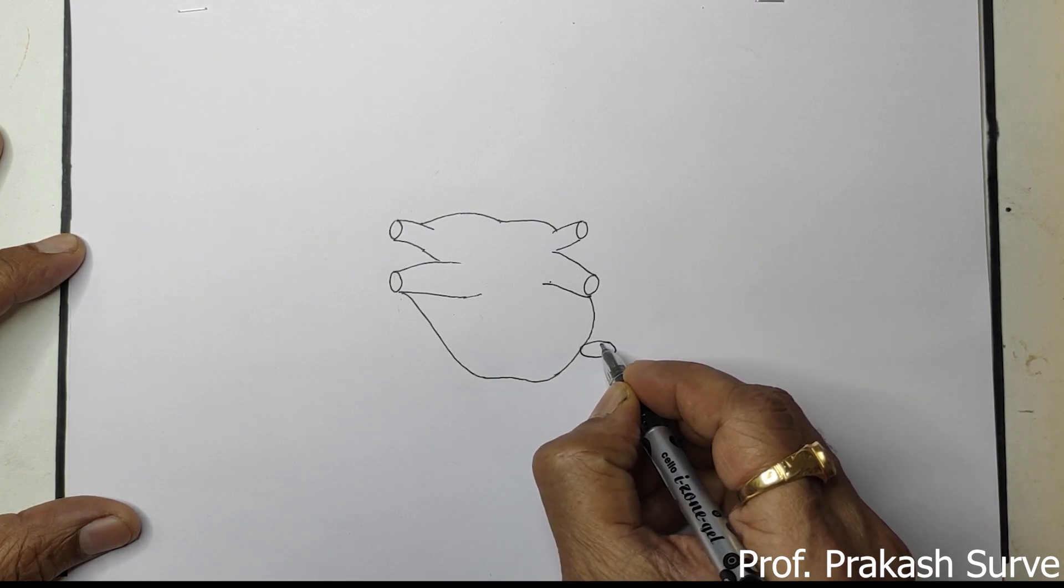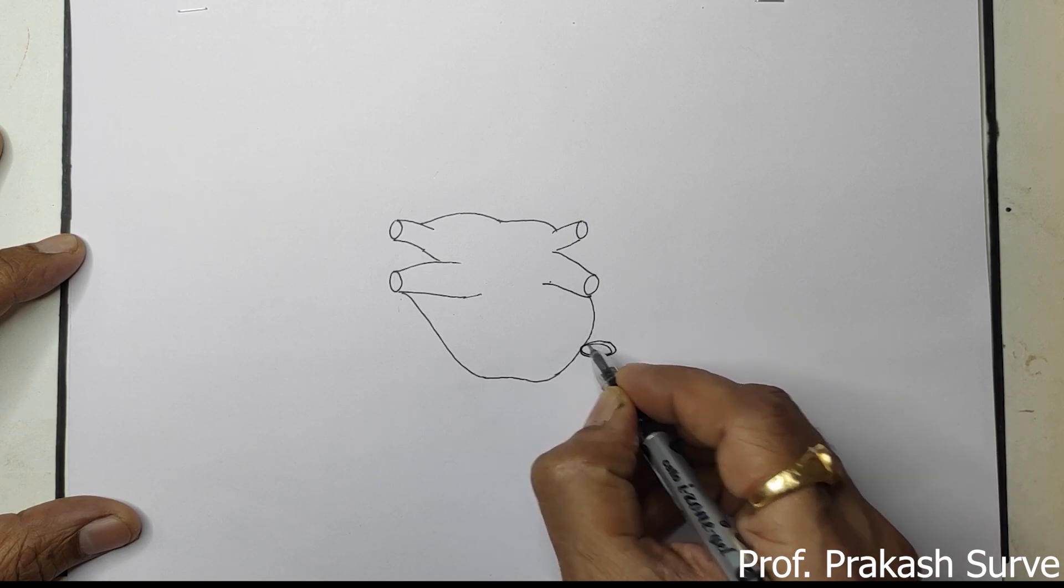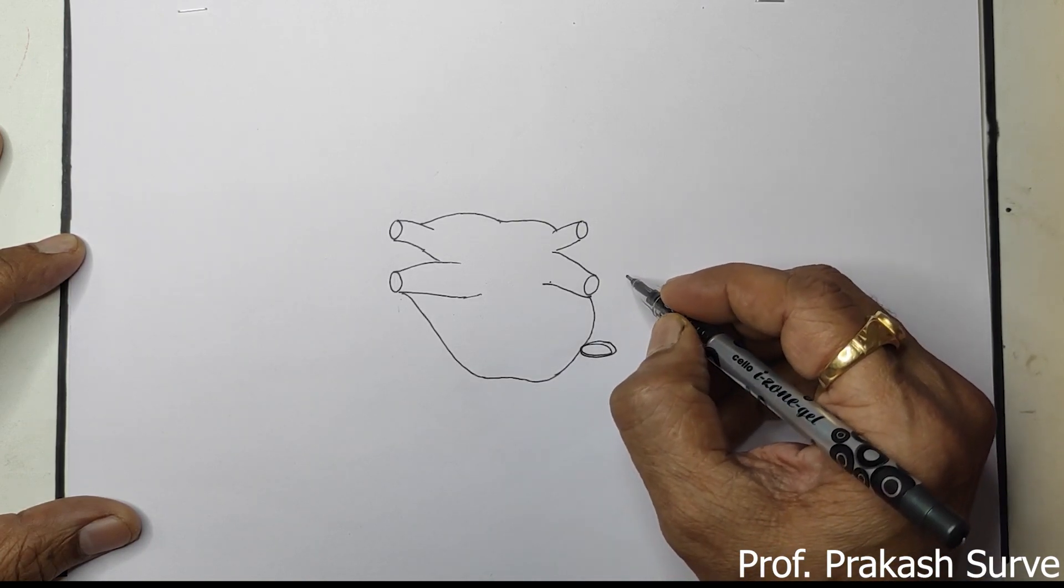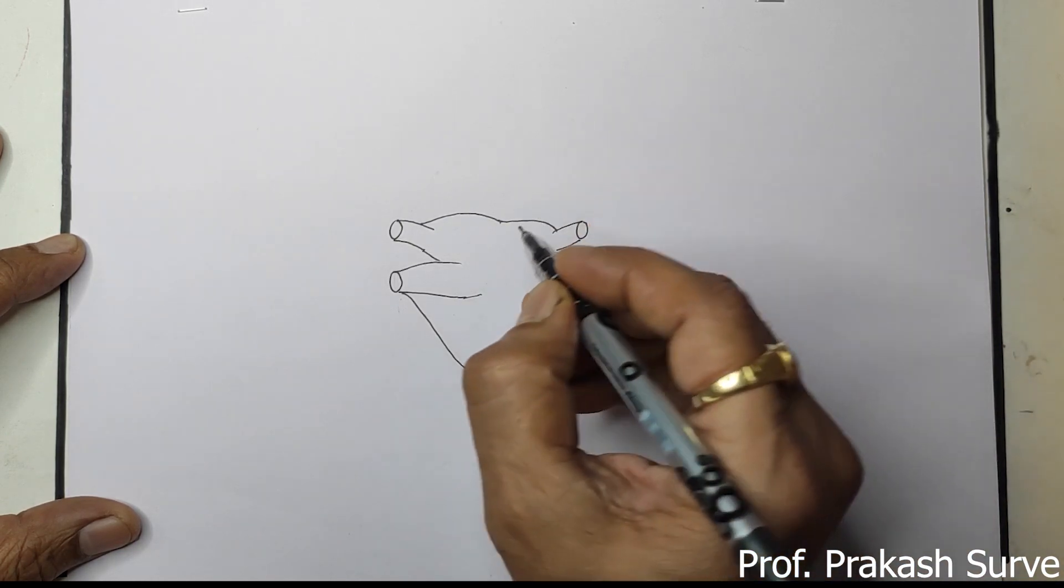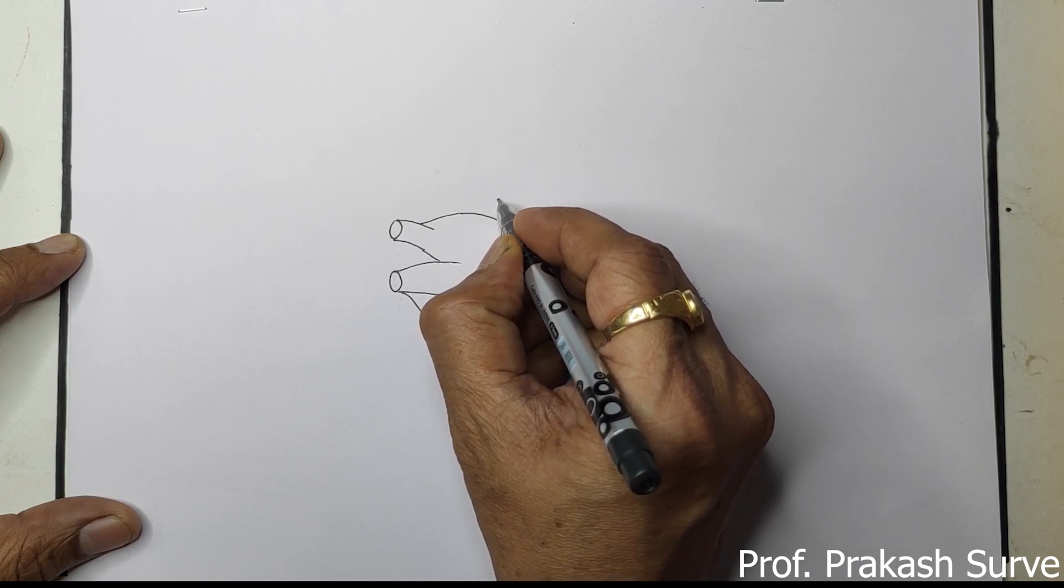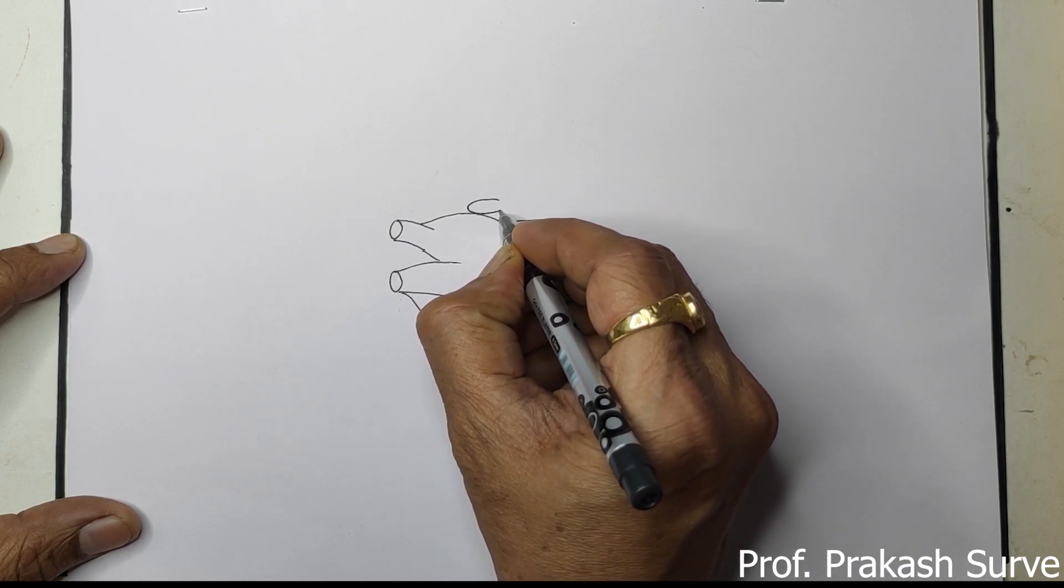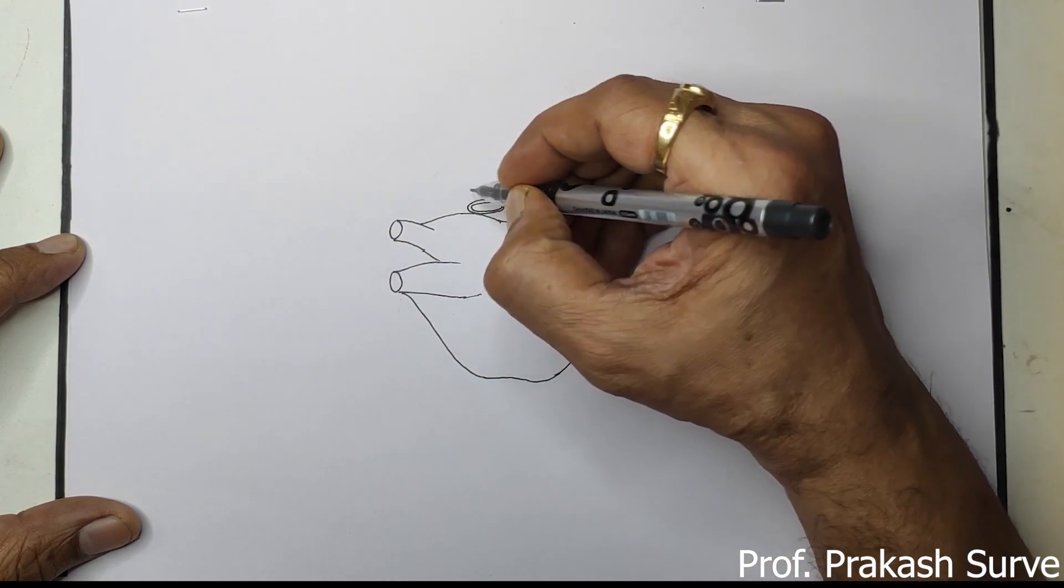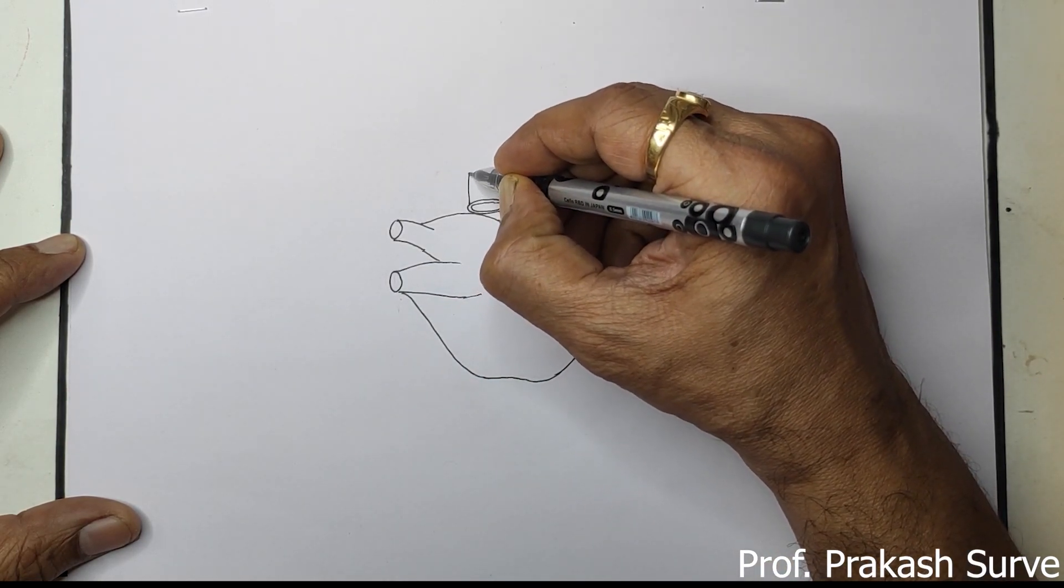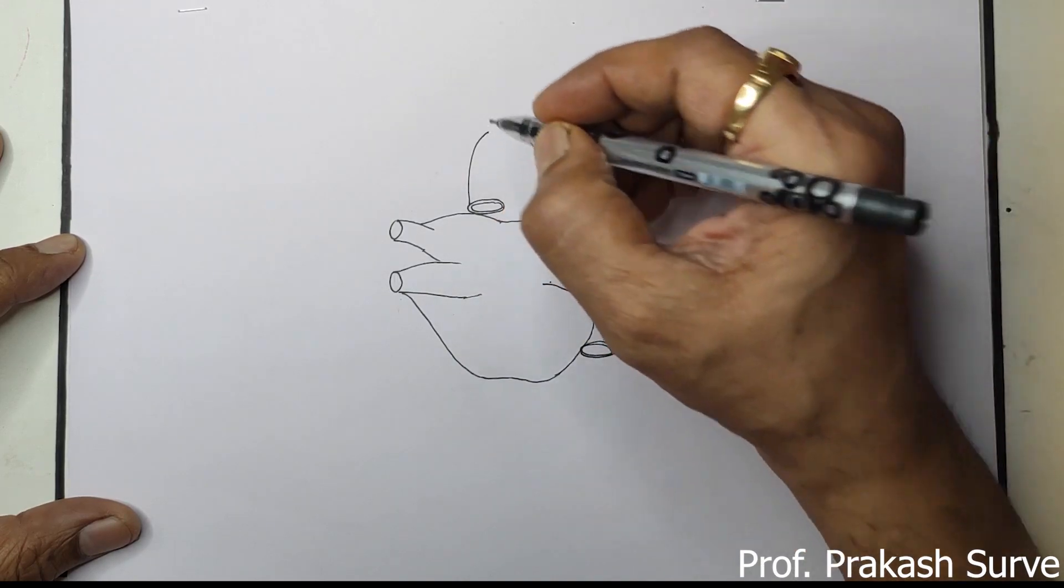Now toward this, we'll make here the inferior vena cava. Now here make the circular shape like that, so this is the aurata.